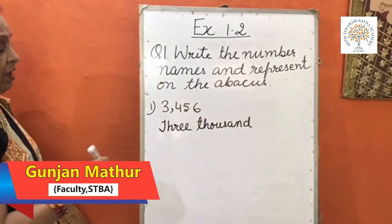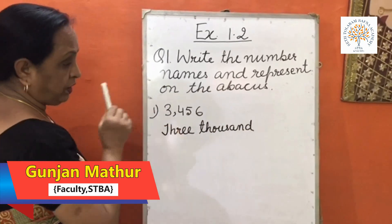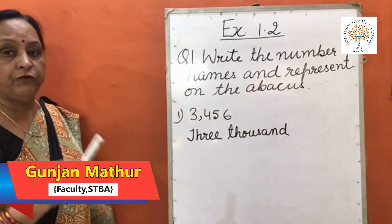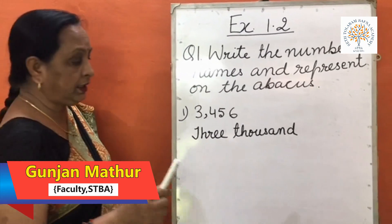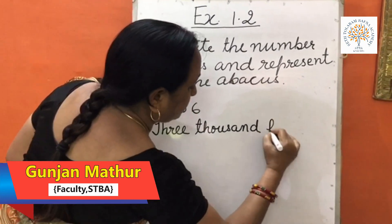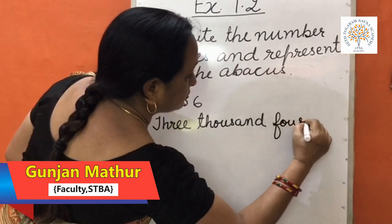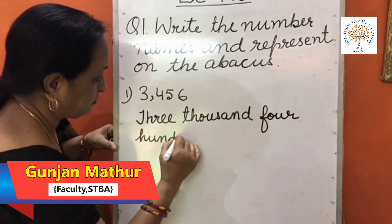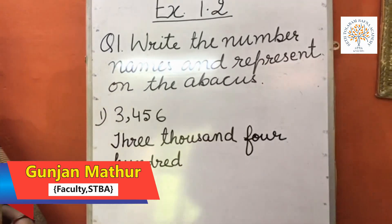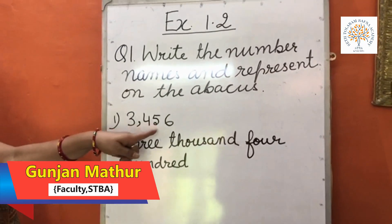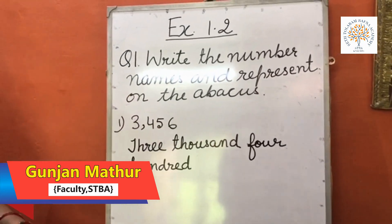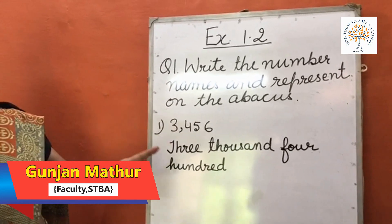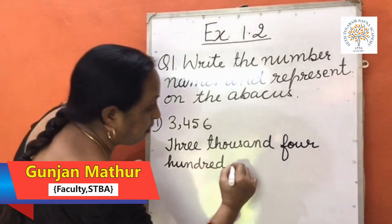The next digit is 4 and the place value of 4 is 100, so value-wise it becomes 400. We write here 400. The next digit is 5 and it is at the 10s place, so value-wise it is 50. We write here 50.